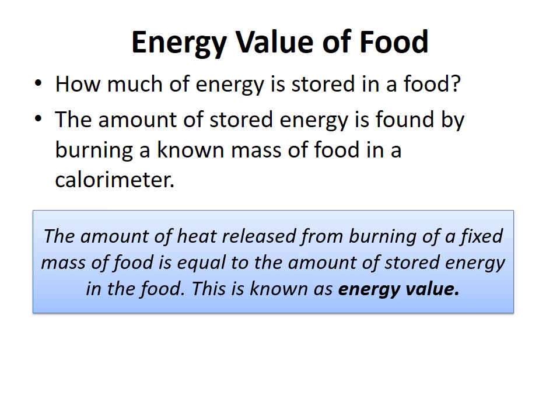The definition of energy value is: the amount of heat released from burning a fixed mass of food is equal to the amount of stored energy in that food. For example, if burning one gram of carbohydrates provides a certain number of joules, then that is the energy stored in one gram of carbohydrates. The calorimeter is the instrument we use to relate the energy obtained by heating food to the energy stored in that food.